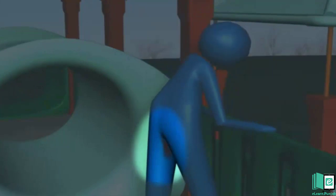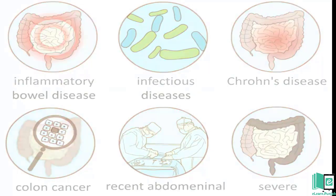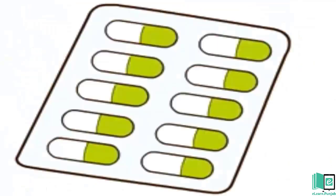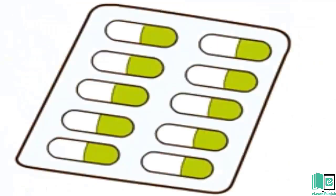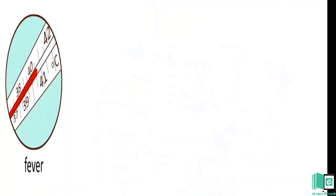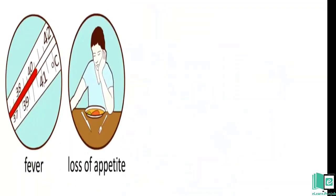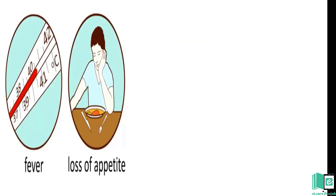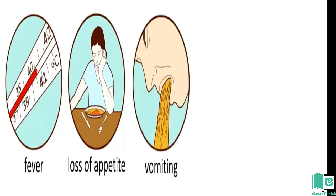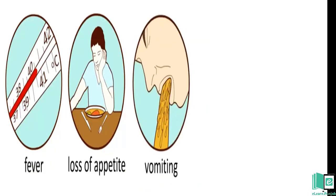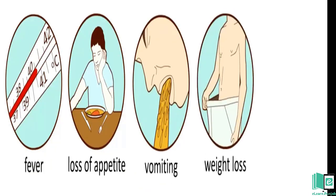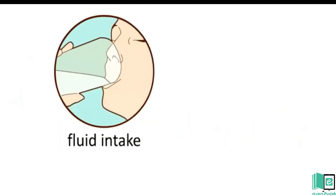Diarrhea may be caused by an infection, eating contaminated food, a reaction to some medicine, or just anxiety or excitement. Some of the most common symptoms of diarrhea are abdominal pain, cramping, bloating, nausea, loose motions, fever, and bloody stools. Diarrhea can be fatal in case of severe dehydration.